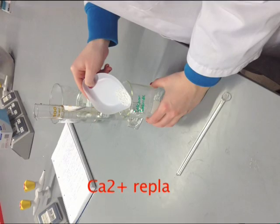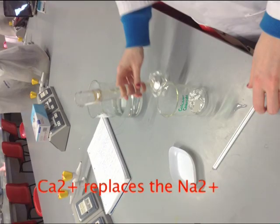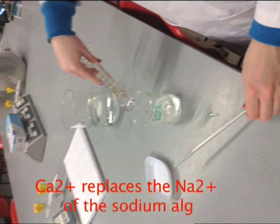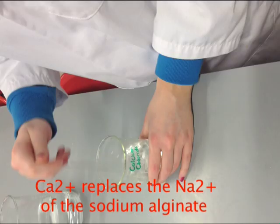Action number five: dissolve 1.5 grams of calcium chloride in 100 cm cubed of water.